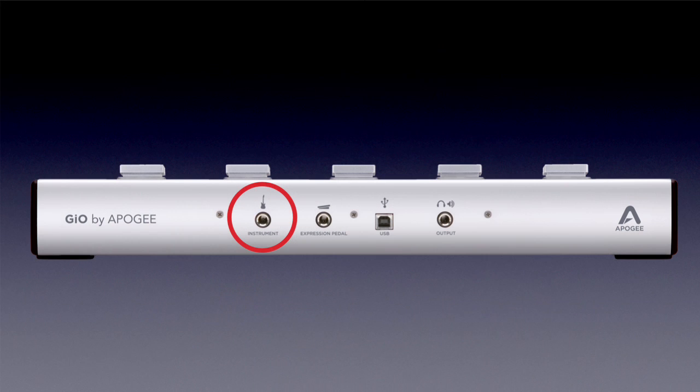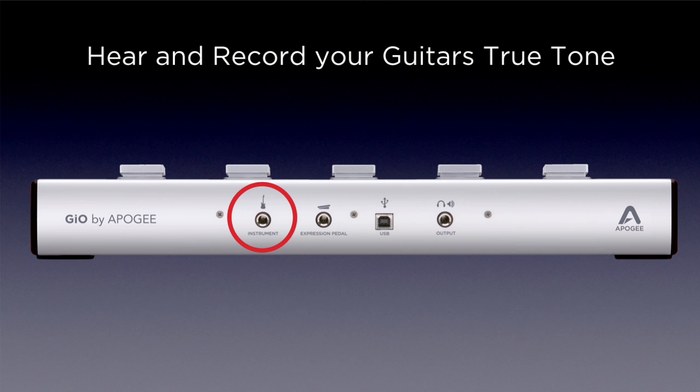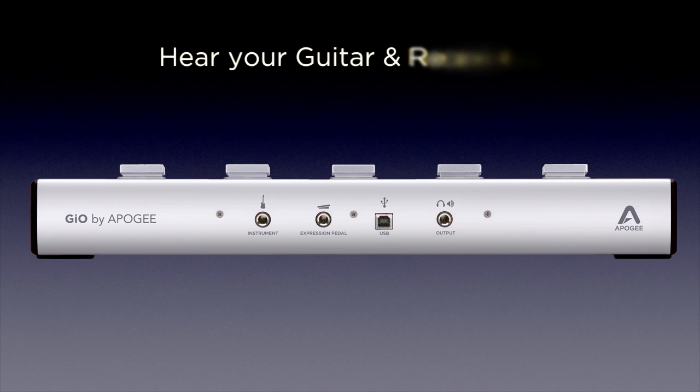GEO's quarter inch instrument input features Apogee's world class instrument preamp and converters. Hear and record your guitar's true tone without compromise. GEO is optimized for all pickup configurations, from the most basic single coil to sophisticated active electronic setups. Hear your guitar in recording like never before.